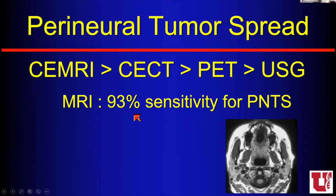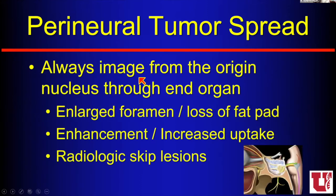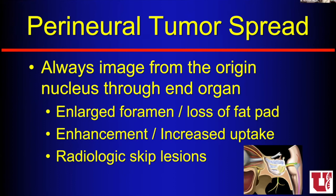Anytime somebody has an isolated cranial nerve deficit, we want to image from the origin nucleus all the way out through the end organ — normally starting behind the pontomedullary junction and going out through the face. We look for enlarged foramina, loss of fat pads, enhancement, and remember the idea of radiologic skip lesions. Because the vascular supply along nerves may be variable, some part may be enhancing and then not, and then more enhancing — but when they do surgery it's tumor all the way along the course of the nerve. So just because part looks like it's not enhancing, keep following the entire course of the nerve.